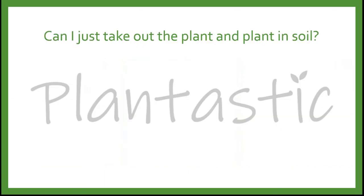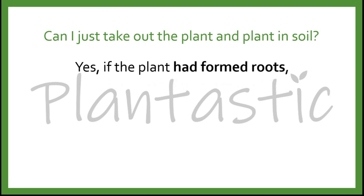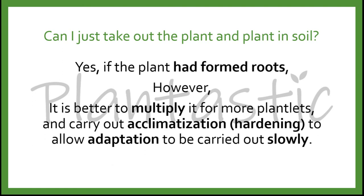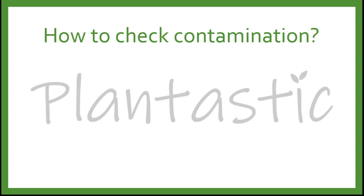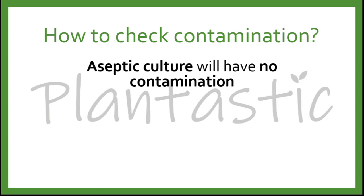When there are roots and shoots, people will ask: can I just take the plant out and plant it in soil? Yes, if the plant has formed roots you may do so. However, it is better to keep it to multiply for more plantlets and carry out acclimatization — also known as the hardening stage — to allow the plant to adapt slowly to outdoor conditions.